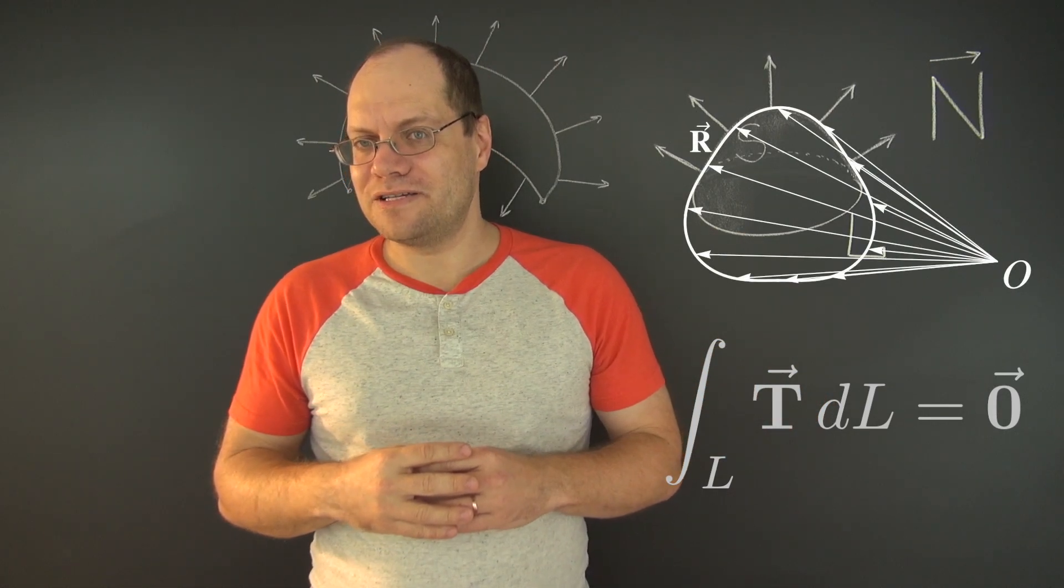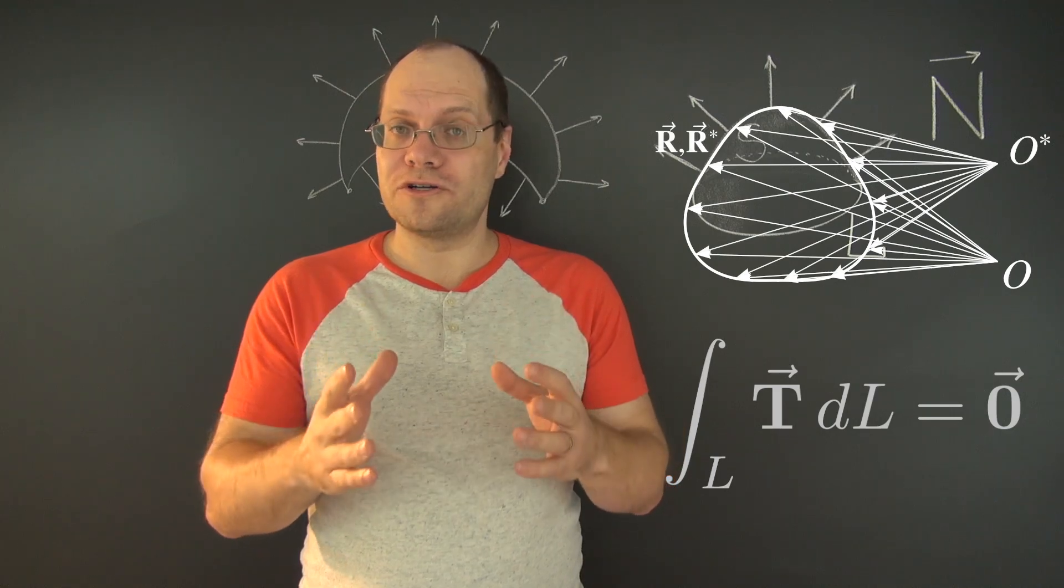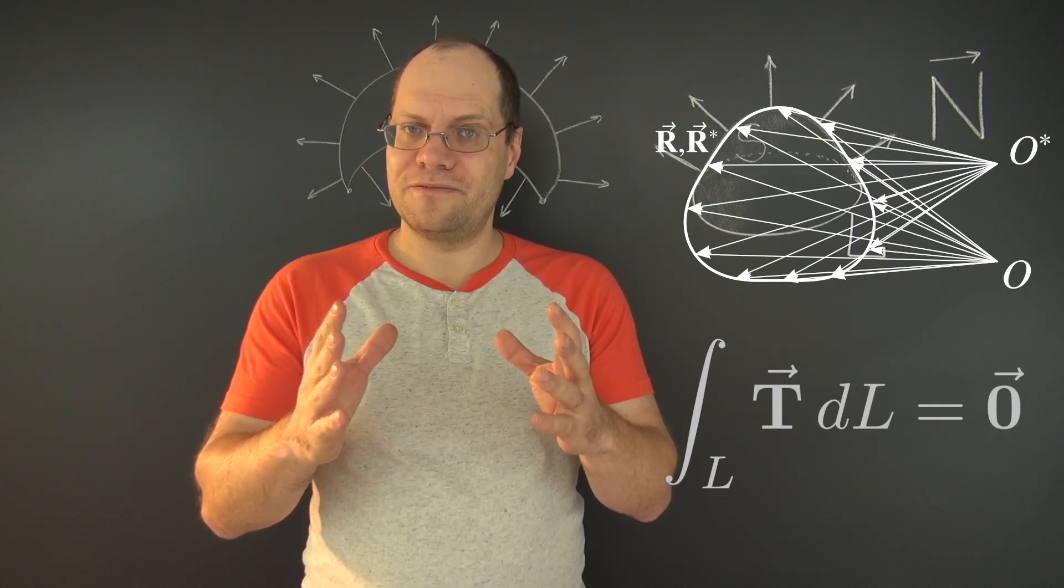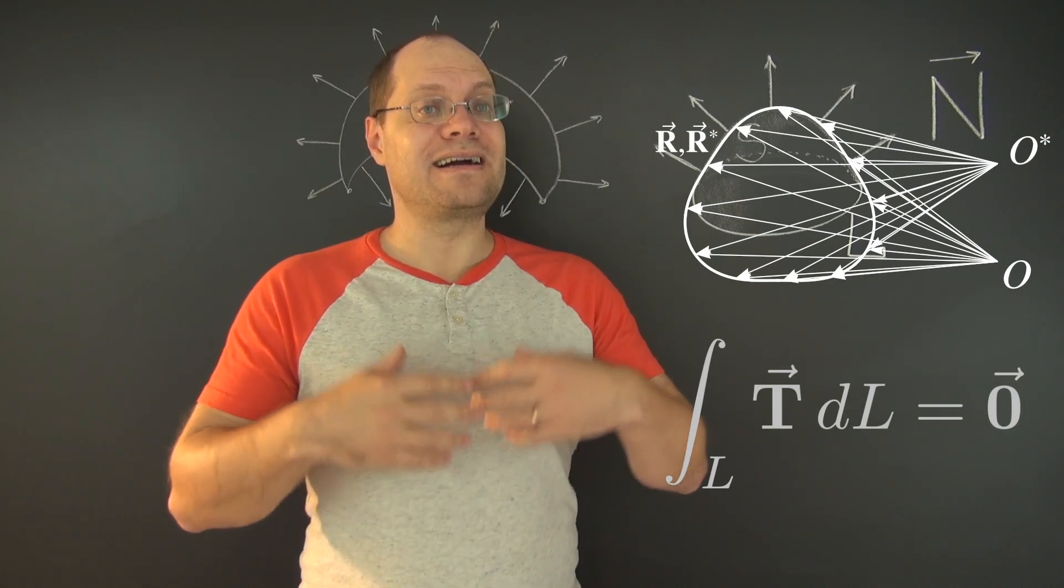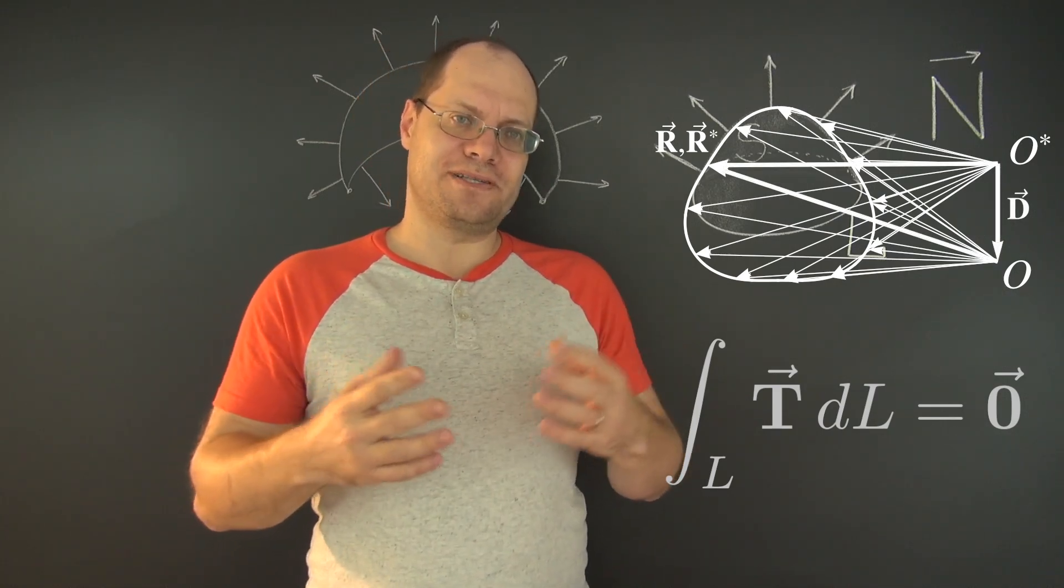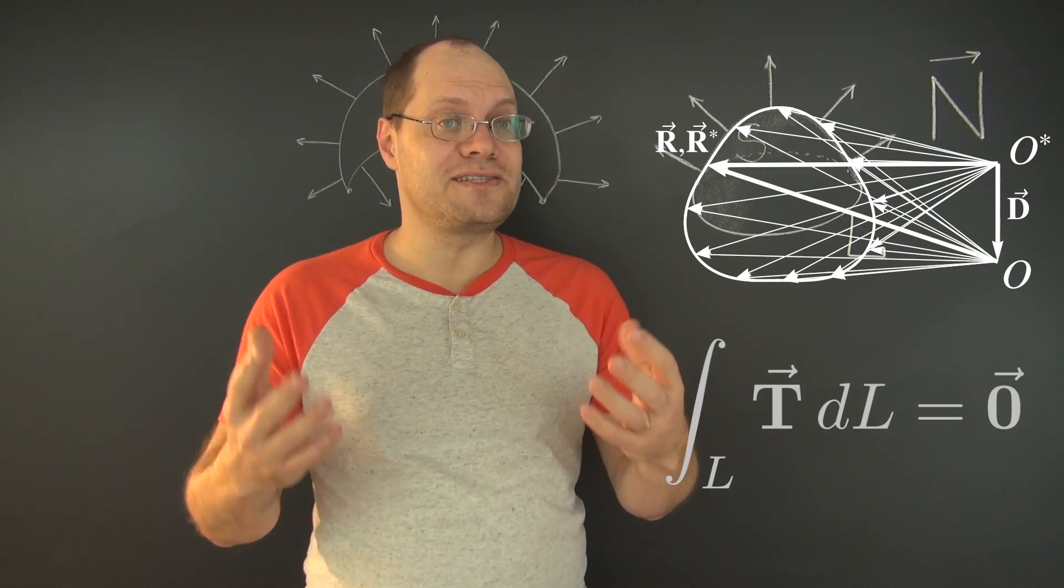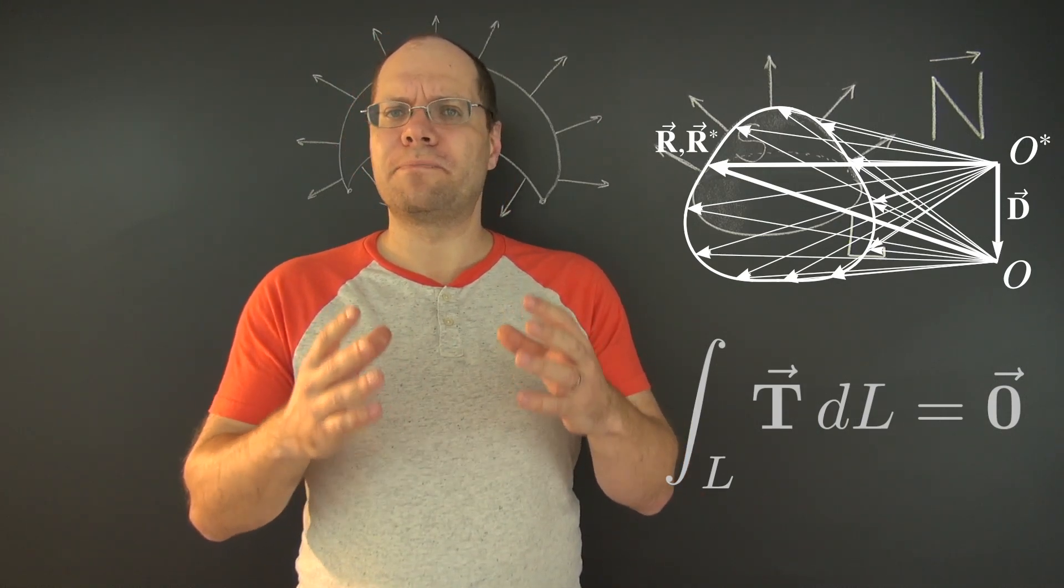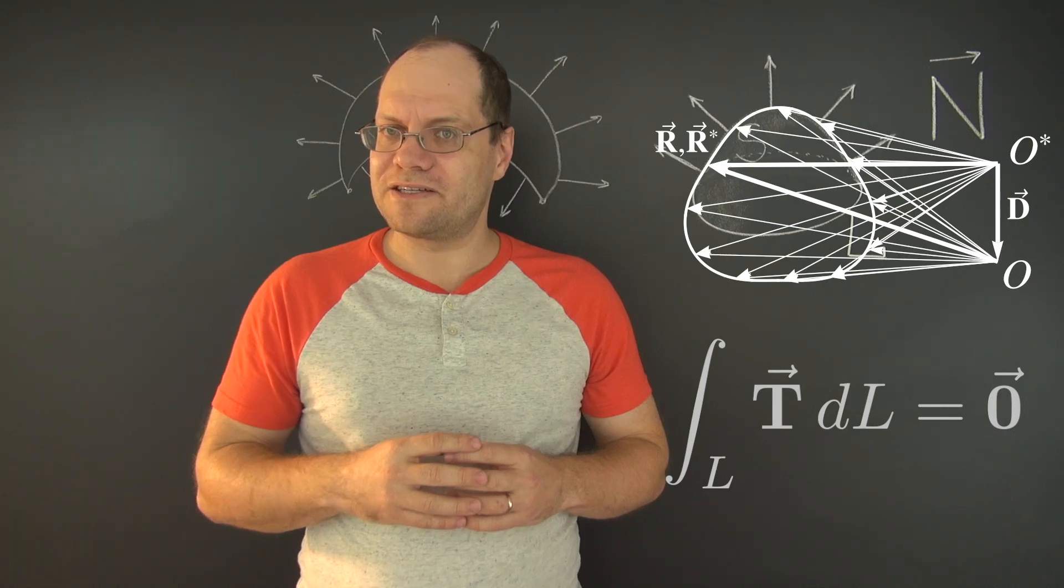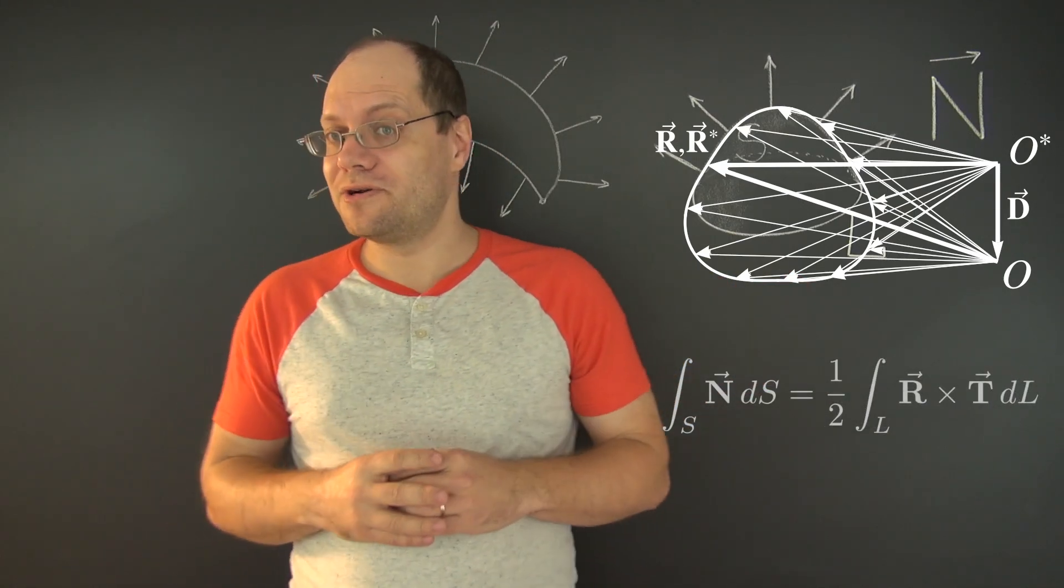Now, the second observation is that moving the origin of the position vector simply amounts to adding a constant vector to each position vector. Now, from these two observations, it takes just a couple of simple steps to show that moving the origin of the position vector leaves the contour integral unchanged.